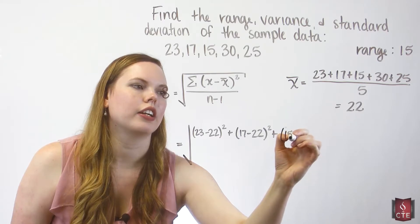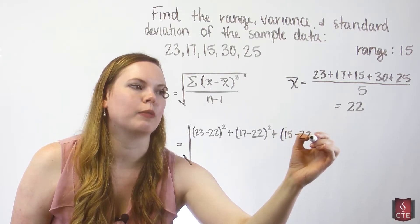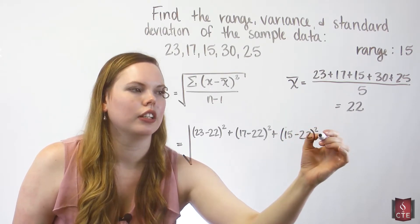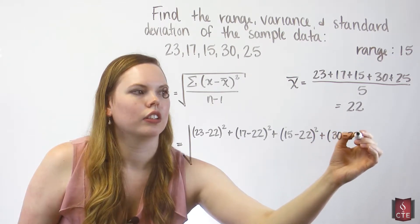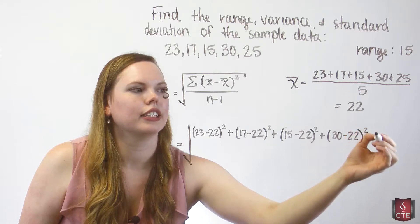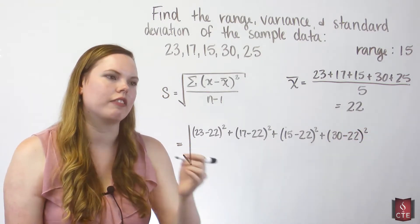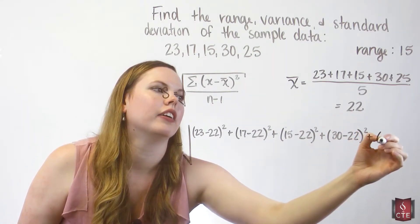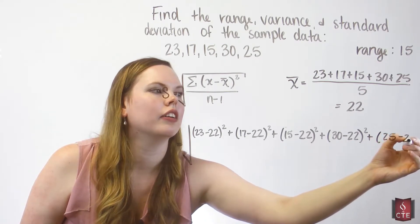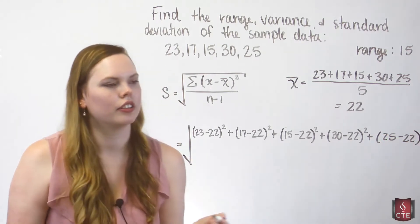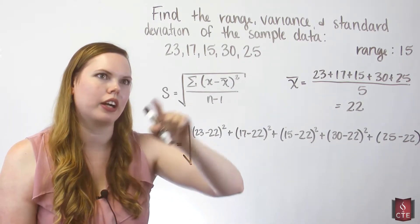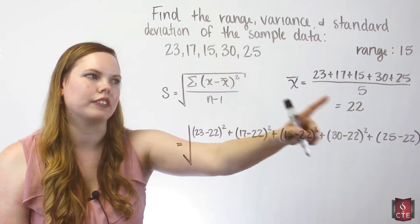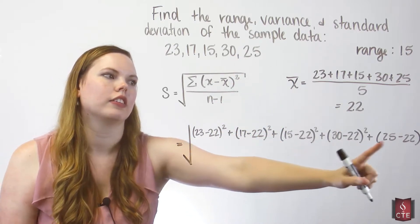Keep going with our third x minus x-bar. Our x-bar is the mean. It's 22. 30 is my fourth x minus x-bar. And then finally 25. We divide all of this. This is all of my x minus x-bar squared. I have each individual x. I've subtracted the mean.